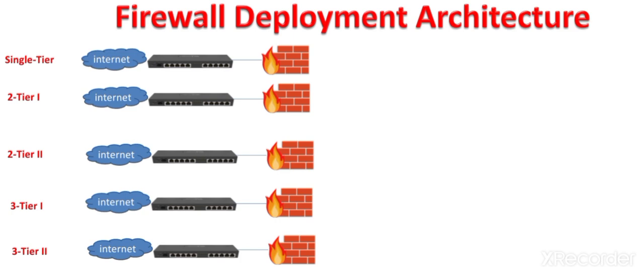Behind the firewall, an organization has deployed a single network, or two networks, or three networks depending upon the requirements. In single-tier architecture, the organization has deployed a single private network which has the sensitive systems, and the firewall provides security to the private network from the internet.